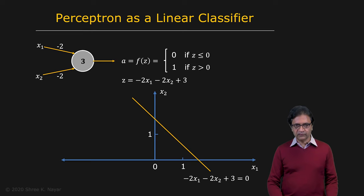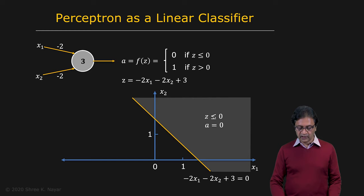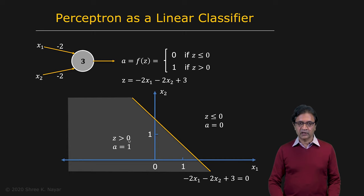So what's happening here is that if you have an x1, x2 that happens to either lie on the straight line or to the right of the straight line, in that case, z is going to be less or equal to zero, and therefore the output or the activation is going to be equal to zero. On the other hand, if you happen to be on the left side of the line, then z is greater than zero, and the output or the activation is going to be equal to one. So the perceptron is behaving like a linear classifier. Linear because it's a straight line in two dimensional space.